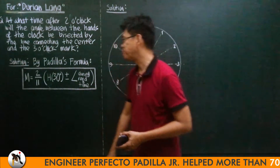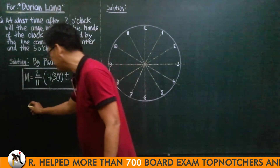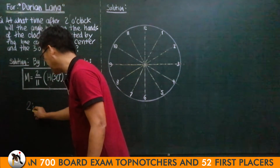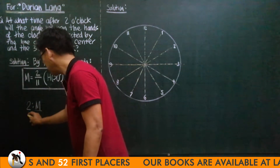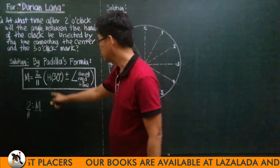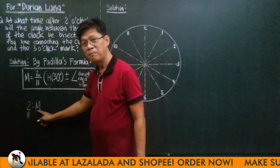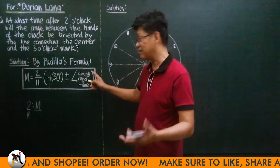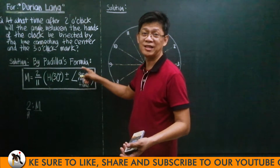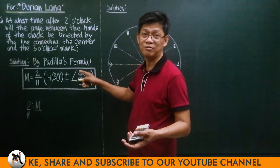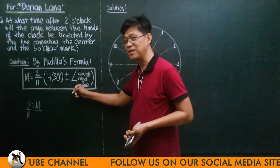For example, at what time after 2 o'clock? We are sure the answer is past 2, so H is known — H is 2. We do not know M. If the hands are together, the angle is 0. If opposite, it is 180. If the question asks at what time after 2 o'clock will they be at a 60-degree angle, then that angle is 60. But in this problem, the angle is not given.